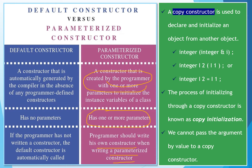A copy constructor is used to declare and initialize an object from another object — when we create one object and give its values to another object, all the data member values of the first object are passed to the second. The syntax is the class name followed by a reference parameter of the same class type, for example: integer(integer &i). Values are not passed by value in a copy constructor — a reference is passed. The process of initializing through a copy constructor is known as copy initialization.